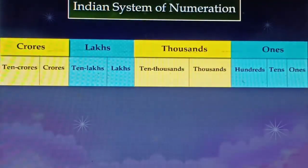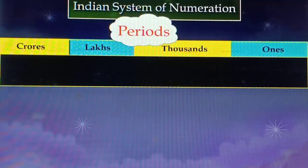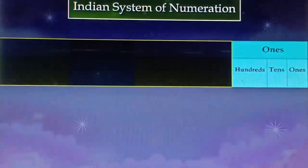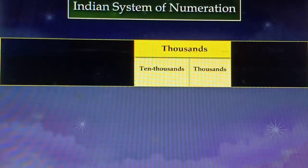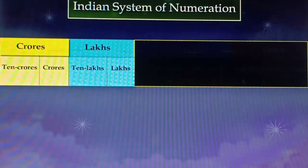For this, look at the following table. This table has four columns called periods, which are the ones period, thousands period, lakhs period, and crores period. These periods are further divided into sub-periods. The ones period is divided into ones, tens, and hundreds. The thousands period is divided into thousands and ten thousands. The lakhs and crores periods are each divided into two sub-periods: lakhs and ten lakhs, and crores and ten crores respectively.